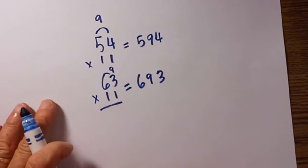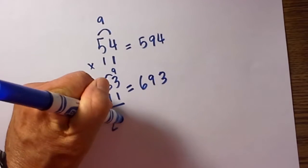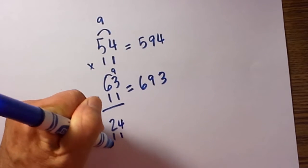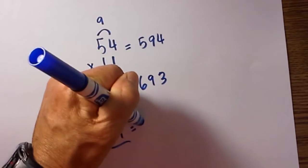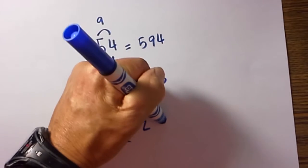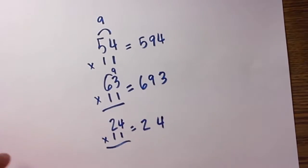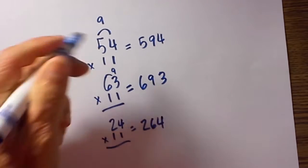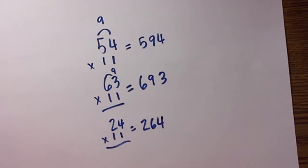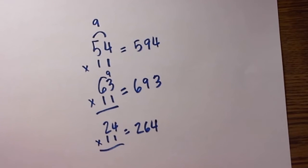Another example: 24 times 11. The first digit is 2. The last digit is 4. 2 plus 4 is 6. So 24 times 11 is 264. You really can get fast at these. You can actually glance at them.